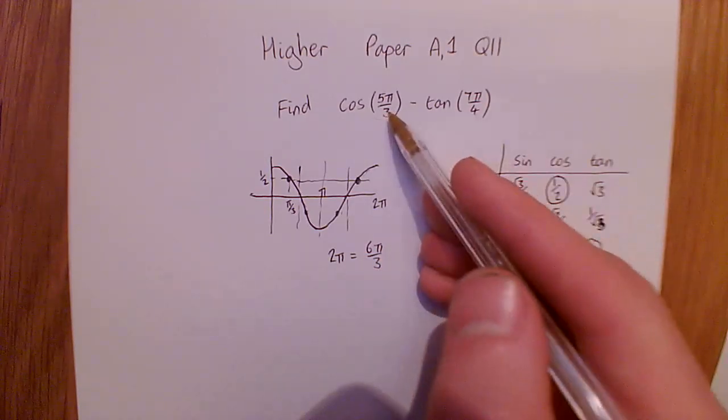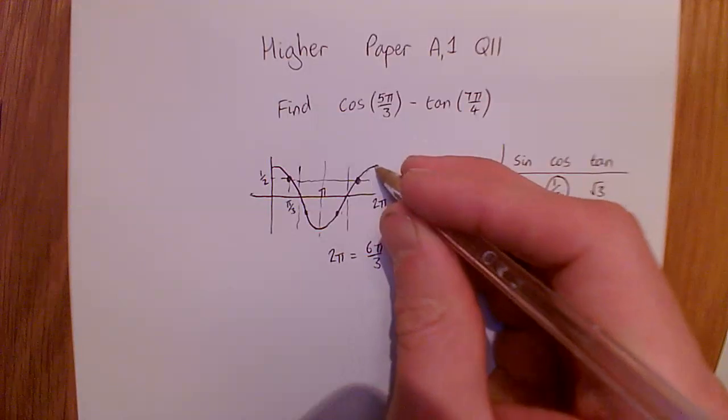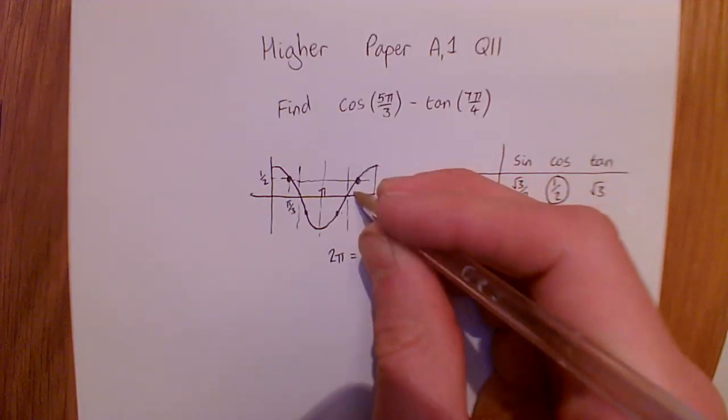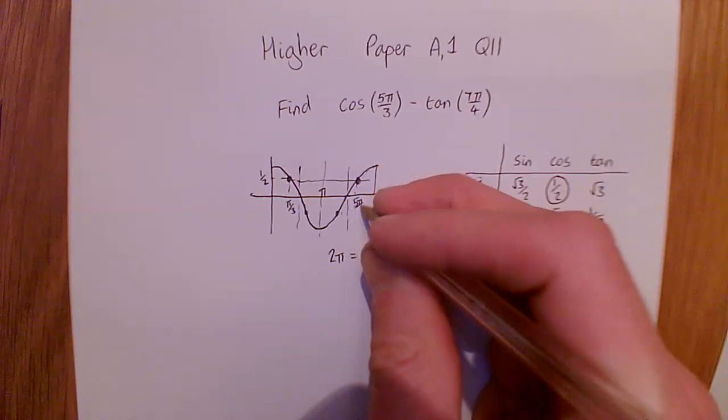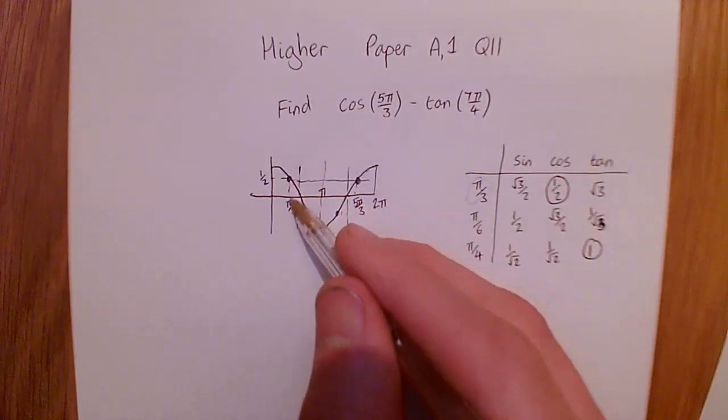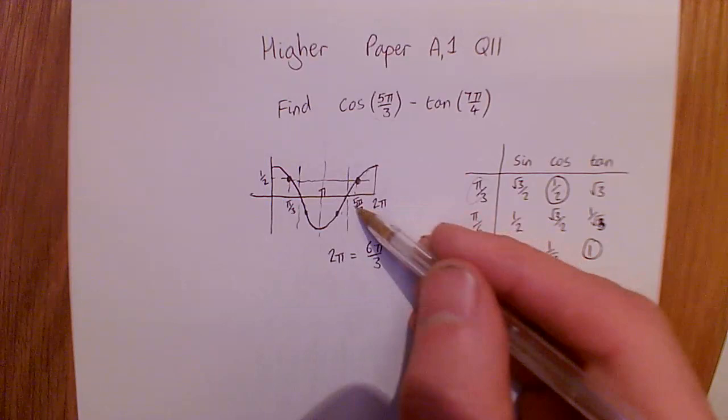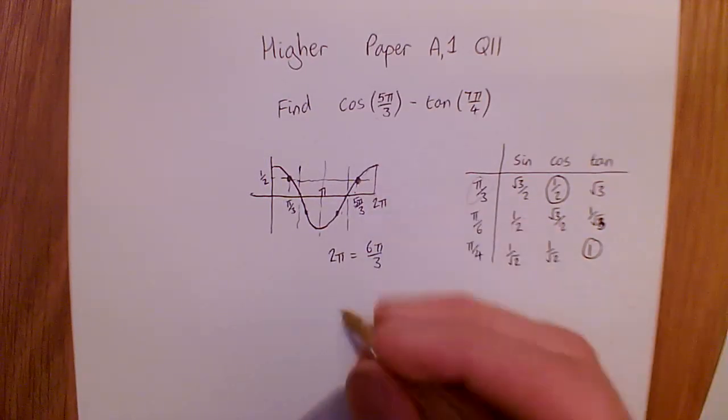Well, 2π equals 6π/3. So we can see that 5π/3 is the same as coming back by π/3 from 2π. So this one here is 5π/3. So from our graph, we can see the value of π/3 is a half, and so will the value of 5π/3.